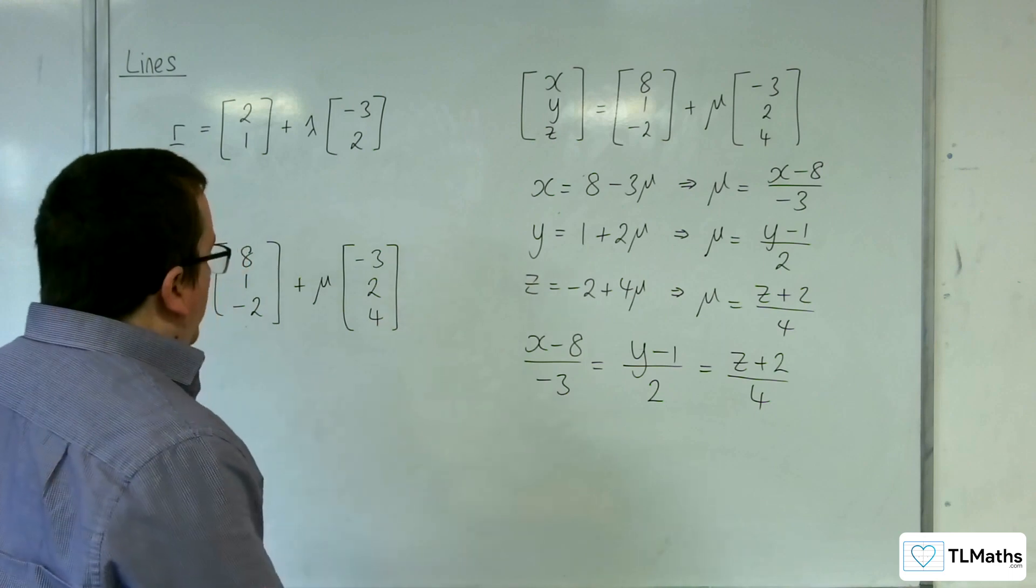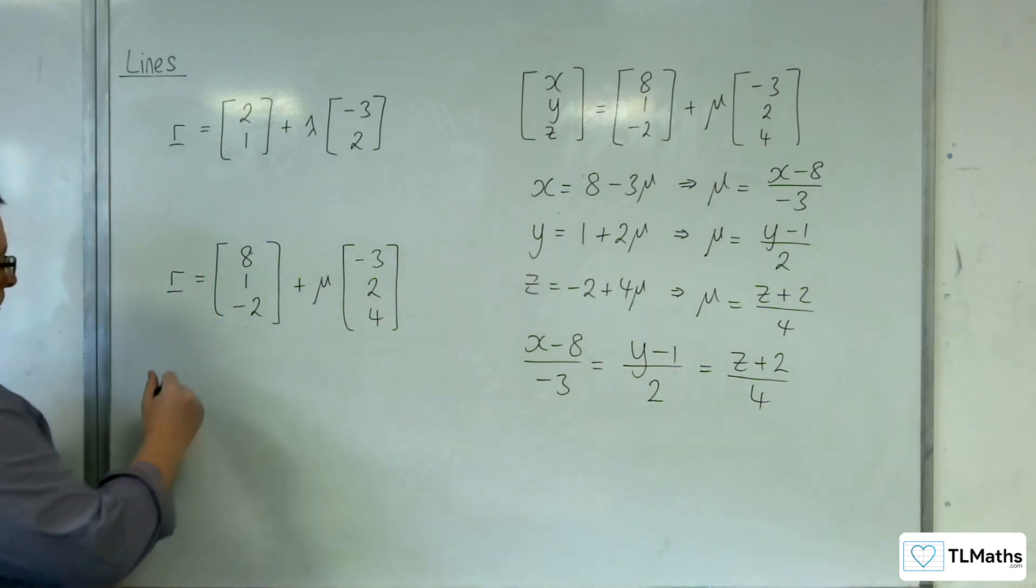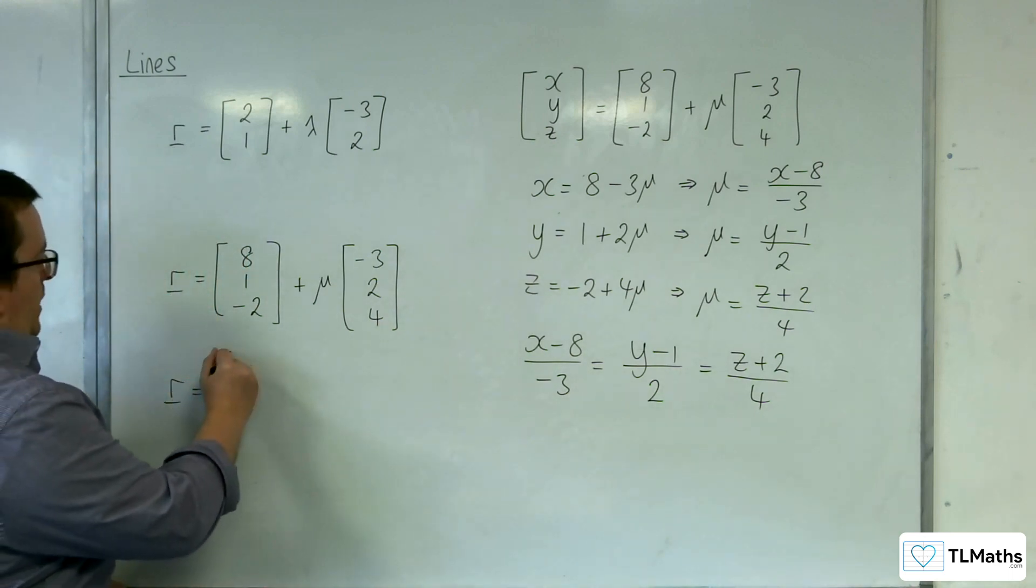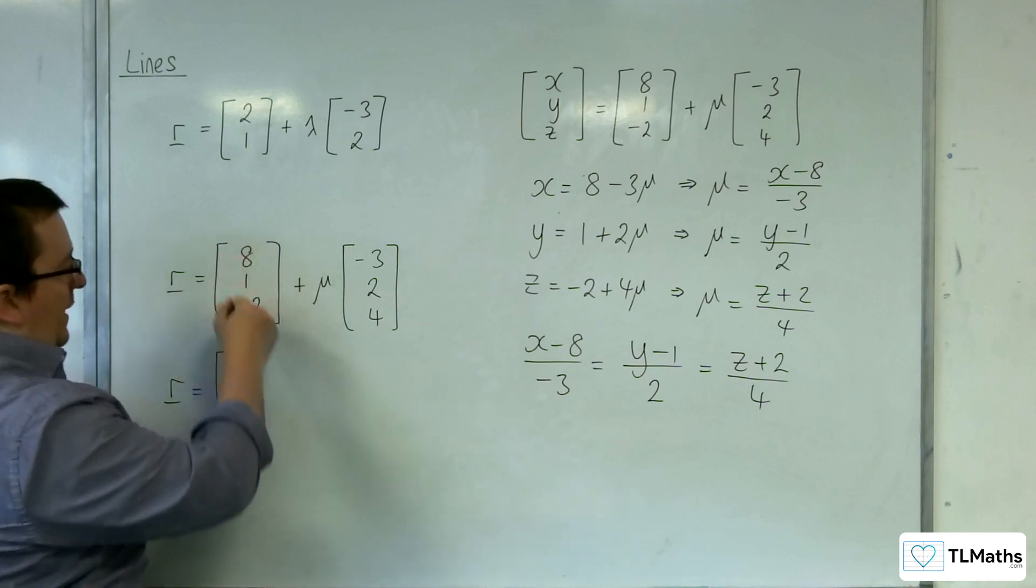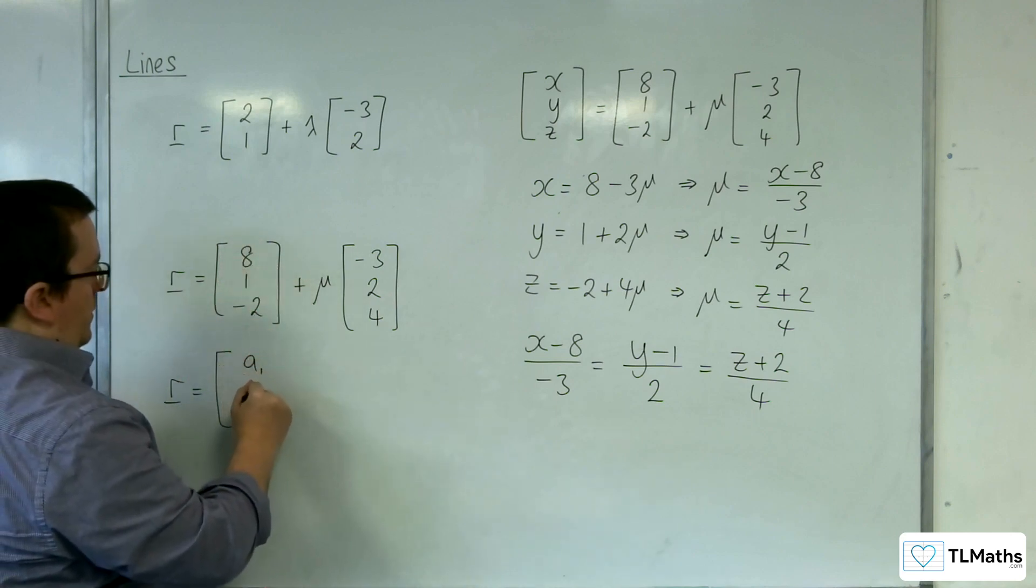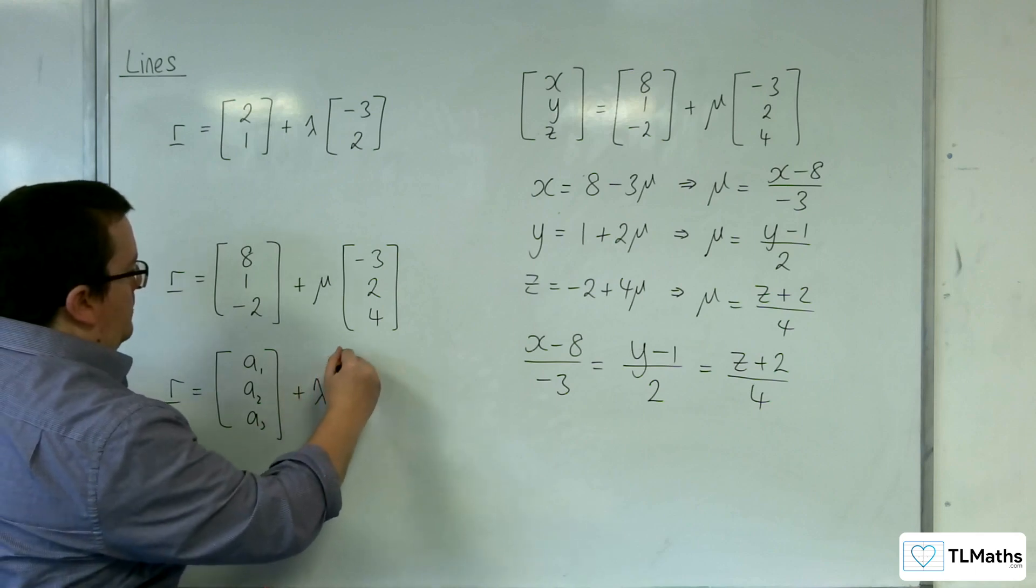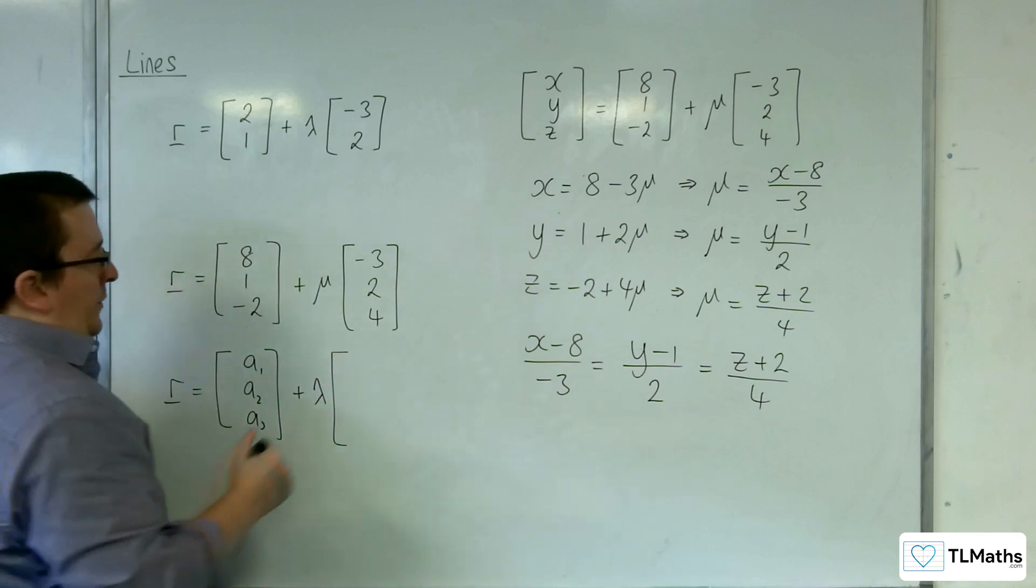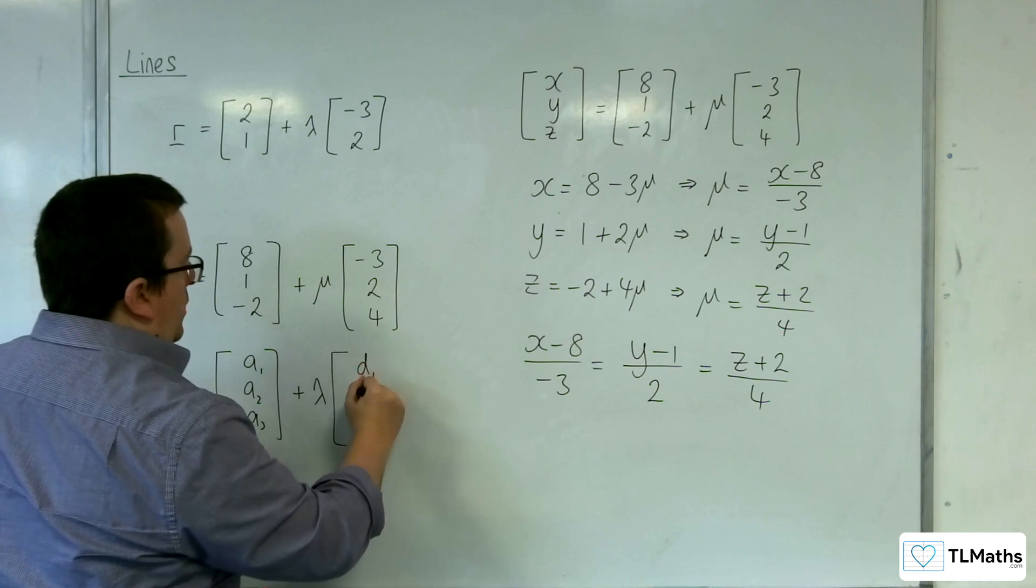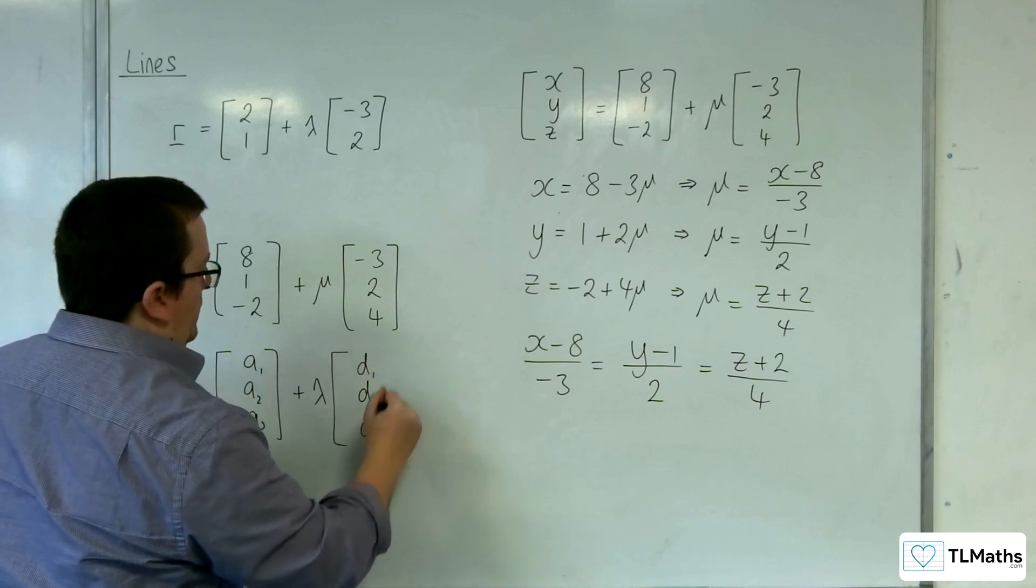So, if you want to do this in general, in general we would have a position vector A1, A2, A3 plus lambda times a direction vector D1, D2, D3.